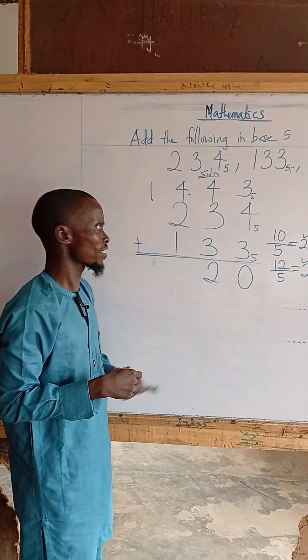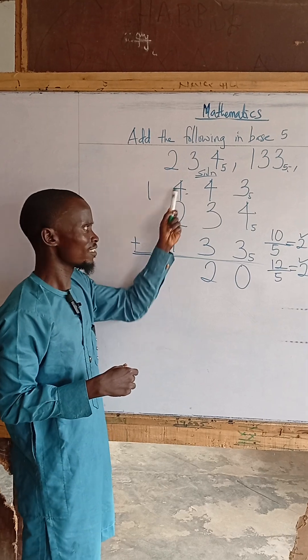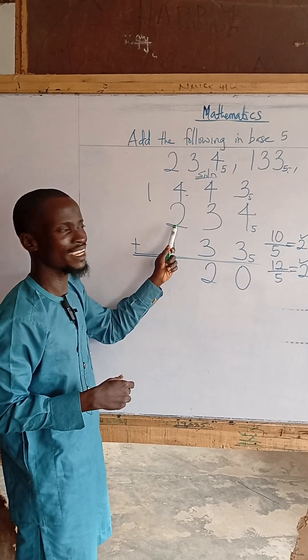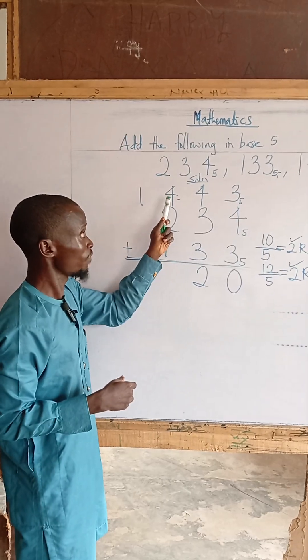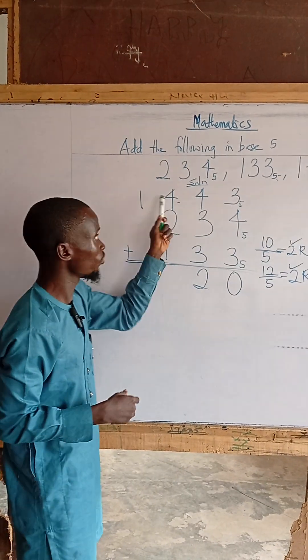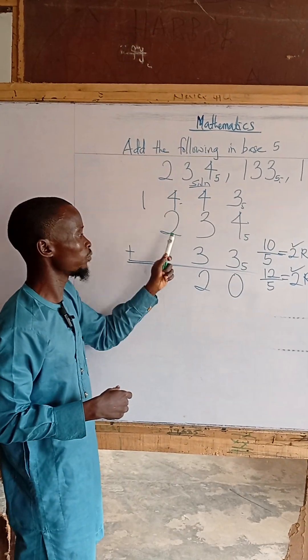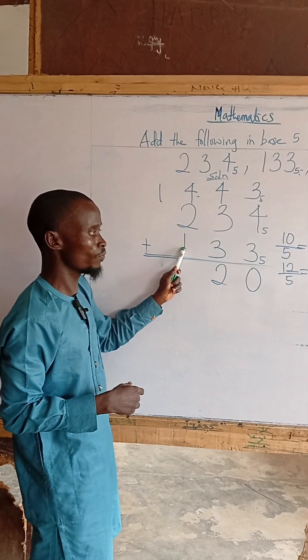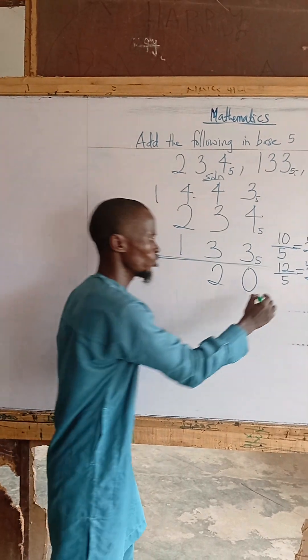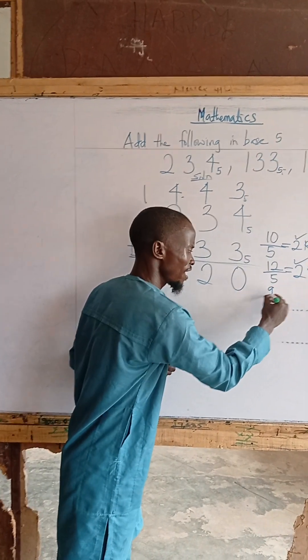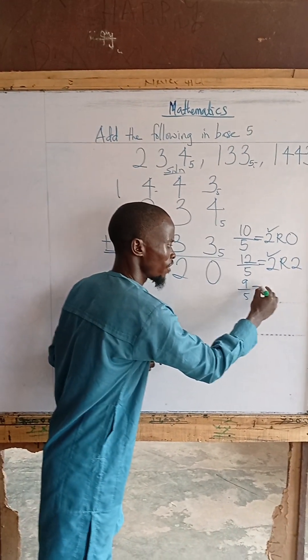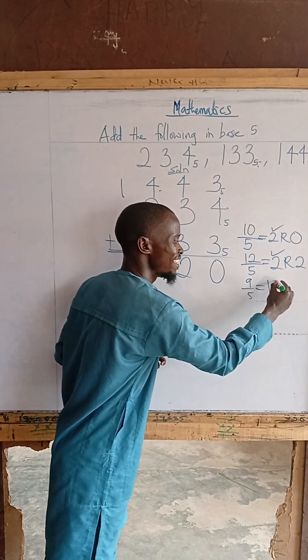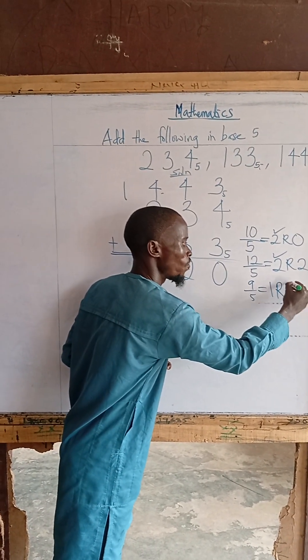Continuing, we have a total of 3 in the next column, then a total of 4. We write down 4.